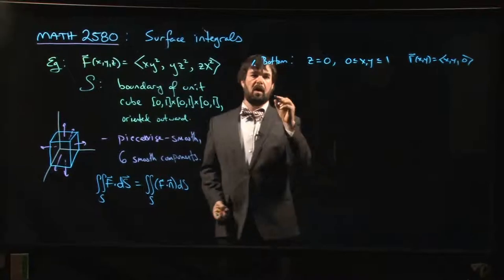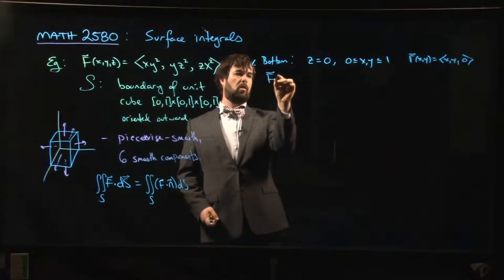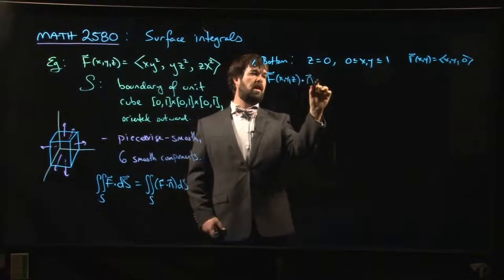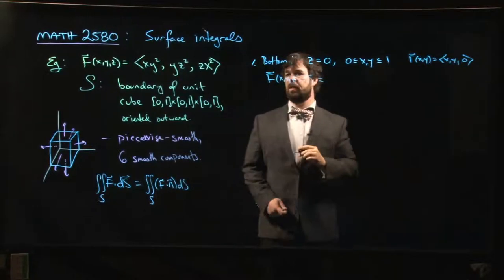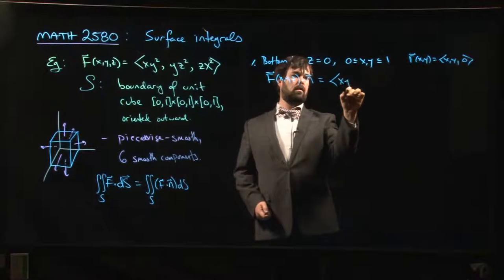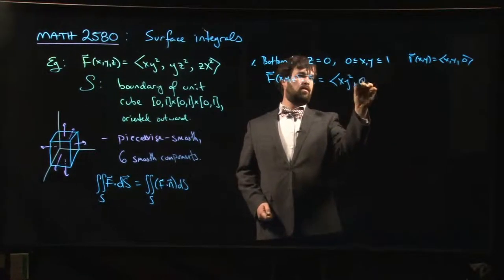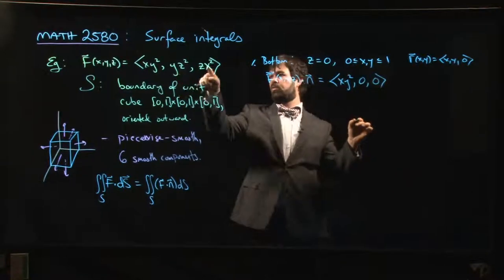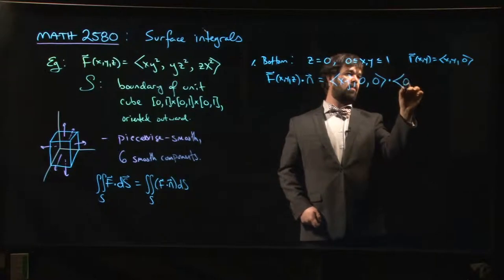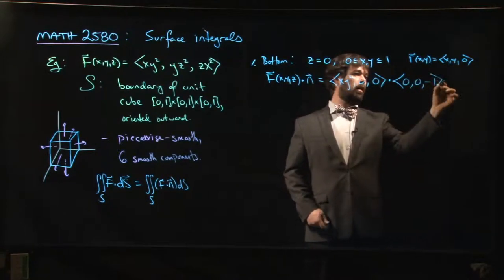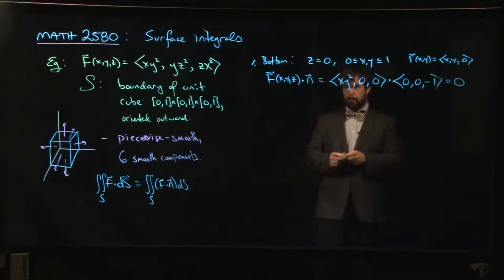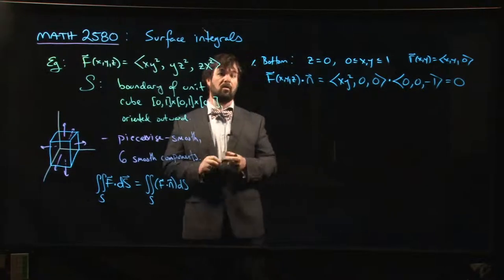So we want to say that f of (x,y,z) dotted with n is going to be, for the bottom, f is going to be (x, y², 0) because z equals zero, dotted with (0, 0, -1). We get zero.